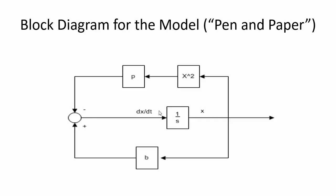We need an integrator block, gain blocks for constants b and p, a block for x-squared, and a summation block. Let's find these blocks in Simulink and implement the model.